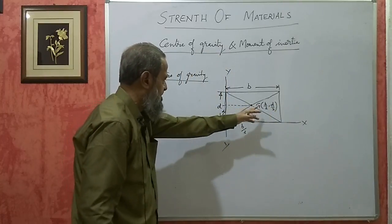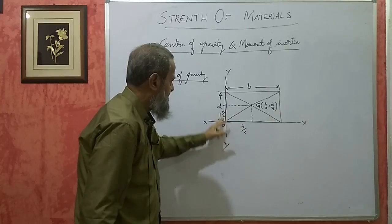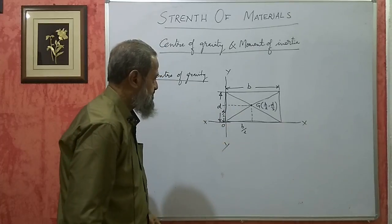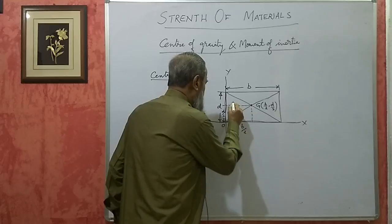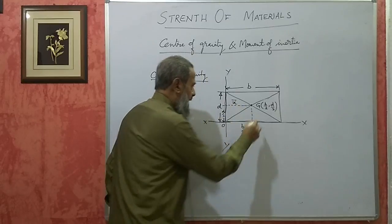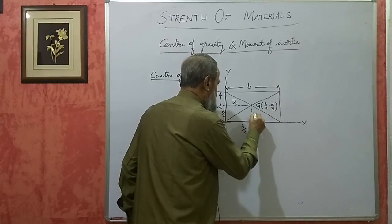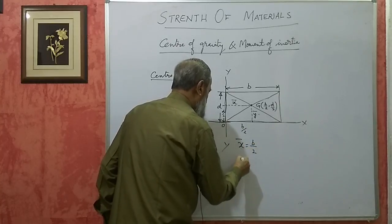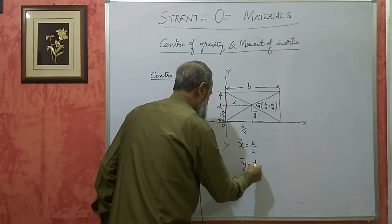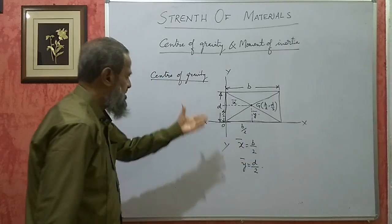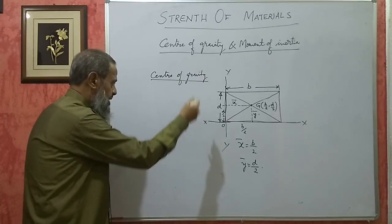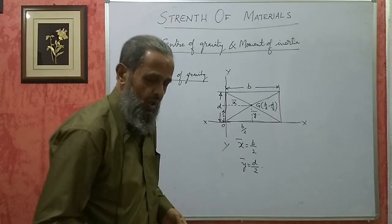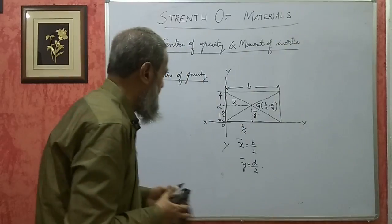Center of gravity is generally given like this — it is half the width and half the depth. B is called the width and D is called the depth. The distance from the Y-axis to the centroid is called x-bar, and the distance from the X-axis is called y-bar. In this case, x-bar is B/2 and y-bar is D/2. For a rectangle, circle, triangle, or square, how to find the center of gravity — you already know this from applied science.